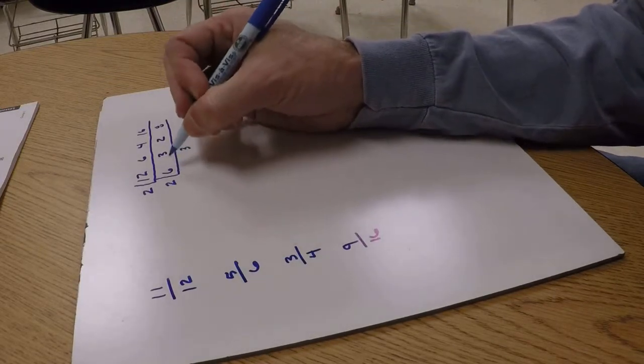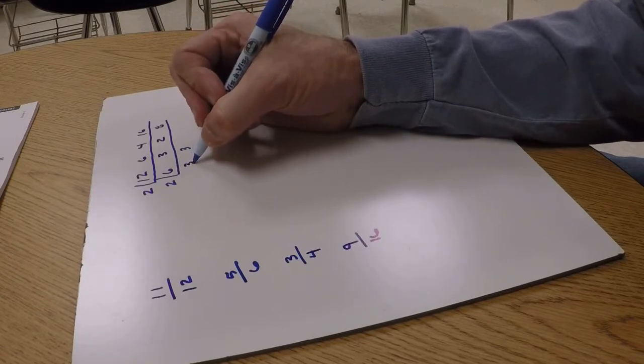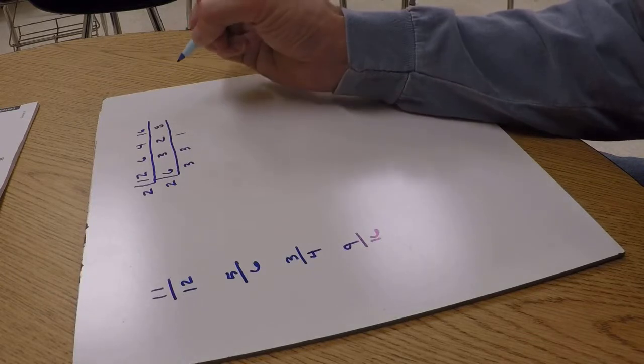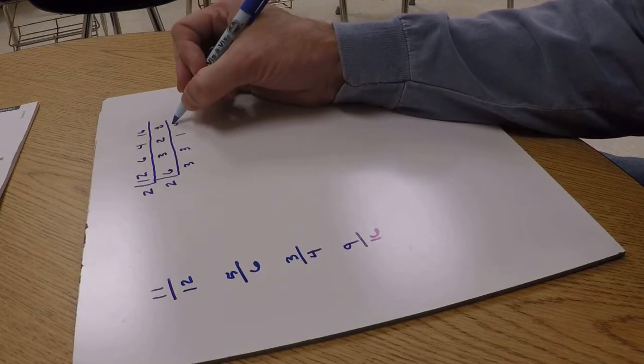So 2 will go into 6, 3 times. 2 will go into 2, 1 time. 2 will go into 8, 4 times.